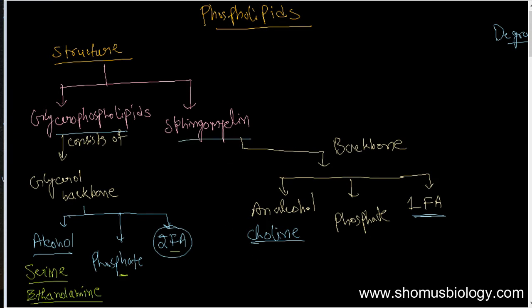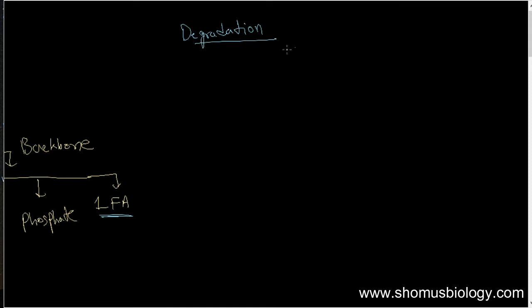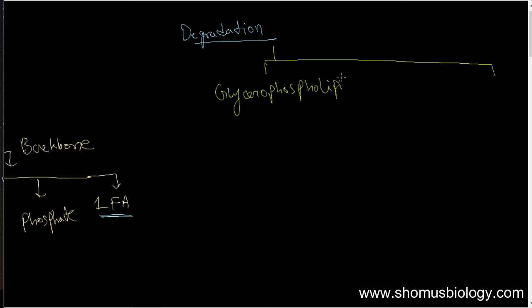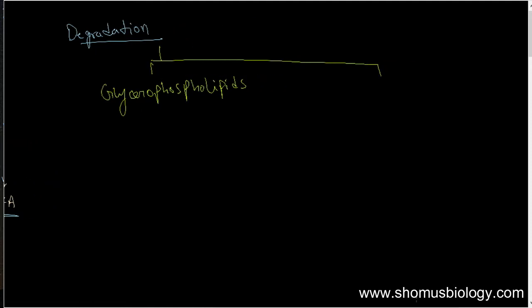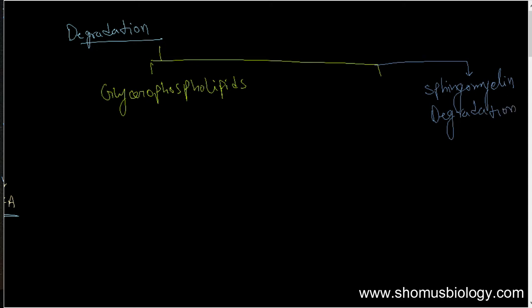So these are the two different types of phospholipids in terms of structure: glycerophospholipids and sphingomyelin. Now let's talk about the degradation of the phospholipids. Degradation consists of two types: glycerophospholipid degradation and sphingomyelin degradation. Glycerophospholipid degradation is catalyzed purely by the enzyme phosphatases.